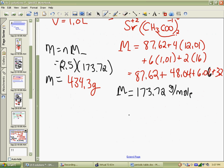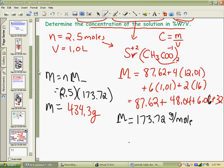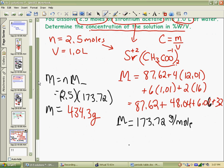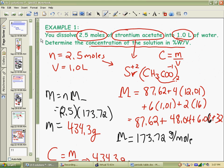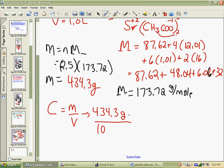Now that we have the mass, we're able to get our concentration in percent weight to volume, because we need our mass in grams, which we see 434.3 grams. We divide that by our volume, which has to be in mils, which is 1,000 milliliters. And that gives us 0.4343 grams per mil.